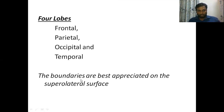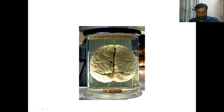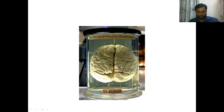Before going to the boundaries, we should understand sulcus and gyrus. A sulcus means a groove on the brain surface. Gyri are the elevated areas between two adjacent sulci. In the diagram we can see numerous grooves — those are the sulci. Between two adjacent sulci, the elevated area is the gyrus.